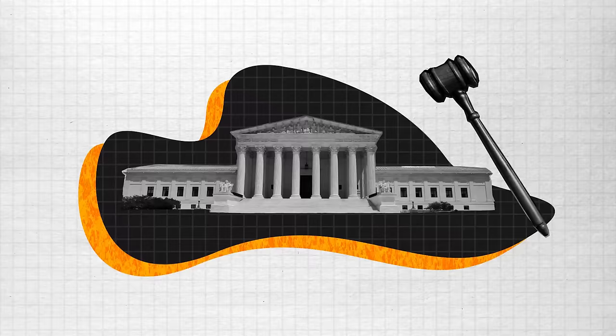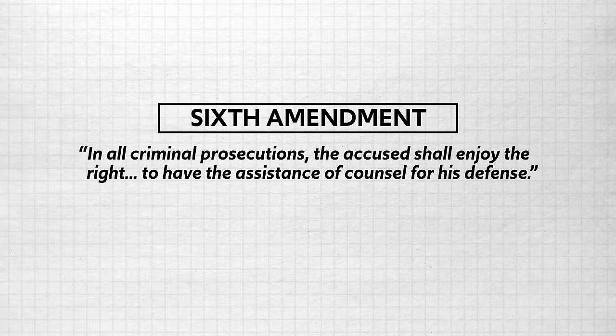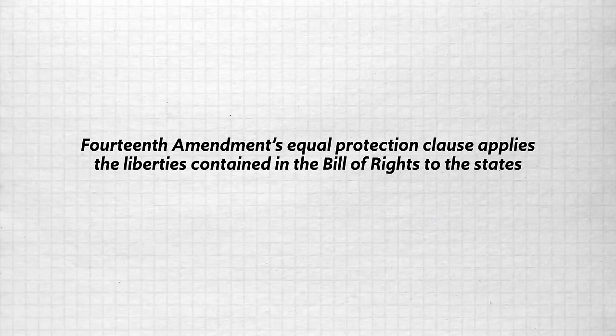Once it arrived at the court, what was the constitutional principle at stake? Well, this was a case based on the Sixth Amendment, which says: in all criminal prosecutions the accused shall enjoy the right to have the assistance of counsel for his defense. Now remember, the Sixth Amendment as written only applies to the federal government. So in this case, a state government was denying Gideon a lawyer, and therefore technically the Sixth Amendment was not being violated because he was not standing trial in a federal court.